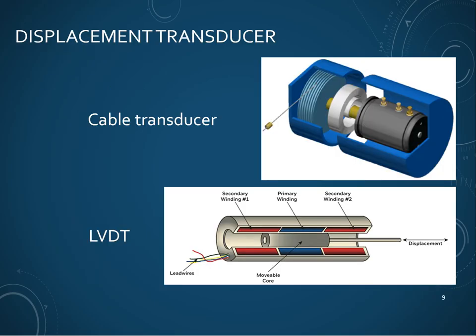Displacement transducers are another class of vibration measurement devices. These include cable transducers and linear variable differential transducers (LVDTs). The physics involve magnetic coils where displacement results in changes in the magnetic field of these coils, which result in changes in voltage that we can measure via data acquisition systems. We can then relate the measured voltage changes to changes in displacement.